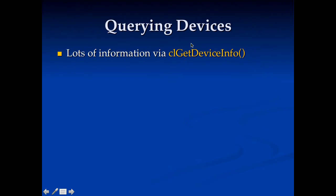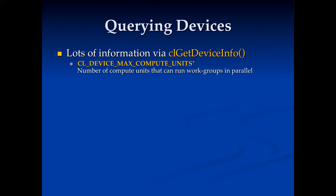The first part here is querying devices. There's an OpenCL command, CL get device info, that can give you lots of seemingly useful information about devices. For example, you can call it with CL device max compute units, and this will tell you the number of compute units that can run in parallel on a device. Obviously, the more compute units you have, the faster the device is going to be.